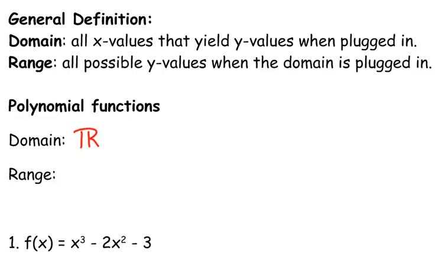So my domain of polynomial functions is all real numbers. Now, at some point in time, I think with the radical functions, I introduced interval notation. I want to bring that back again. So all real numbers can also be expressed as negative infinity to positive infinity inside of a set of parentheses. And these are referring to x values. These are domain, our x values.